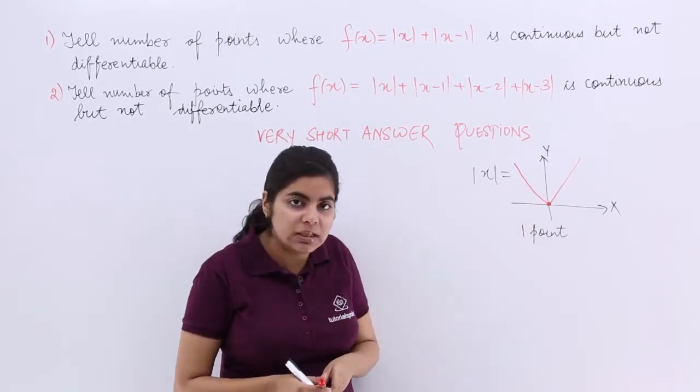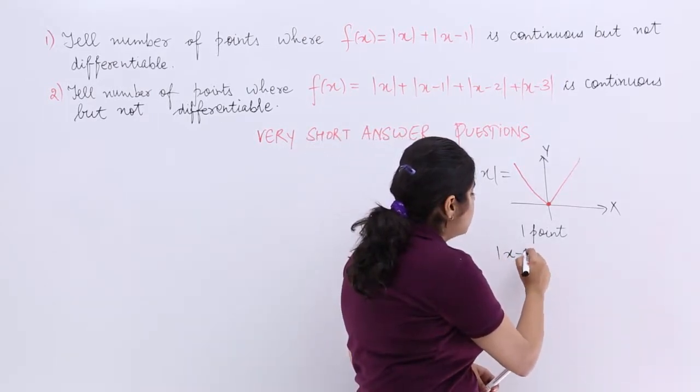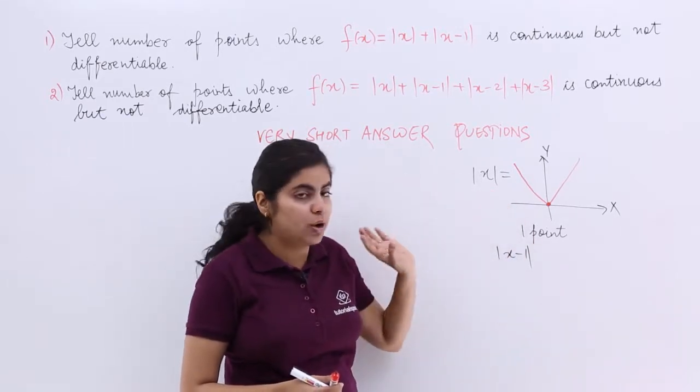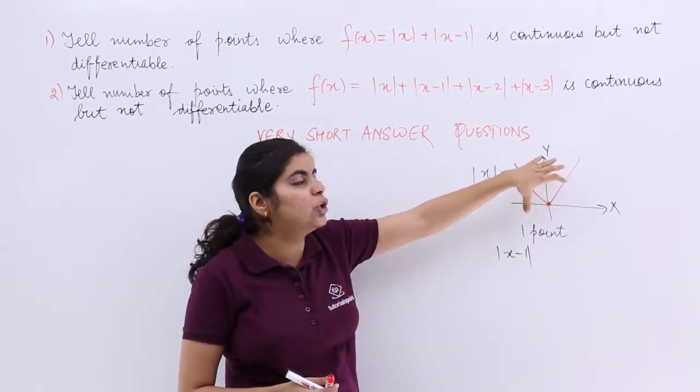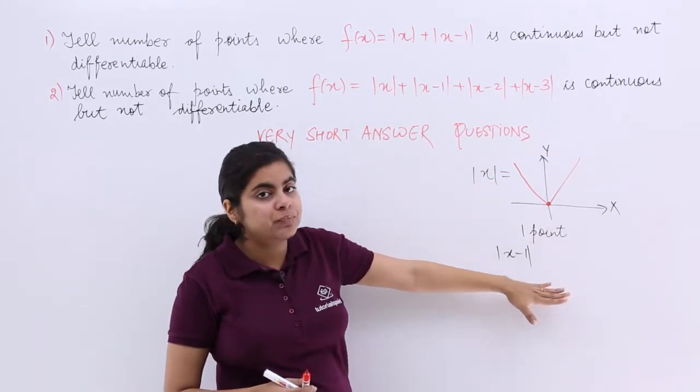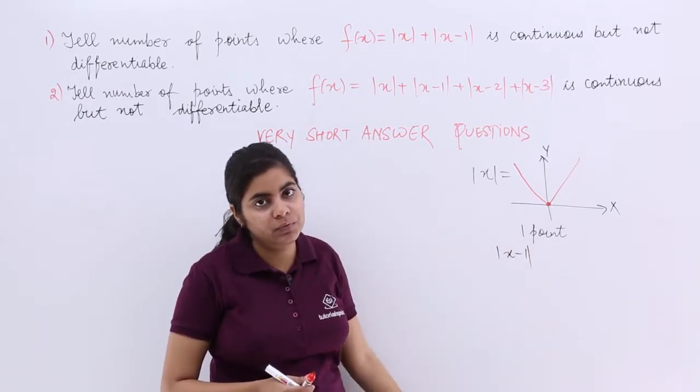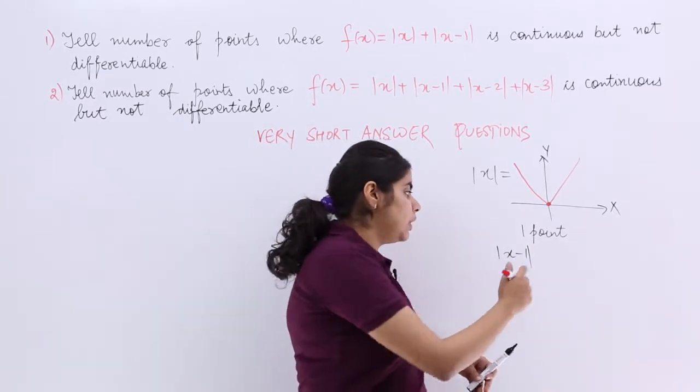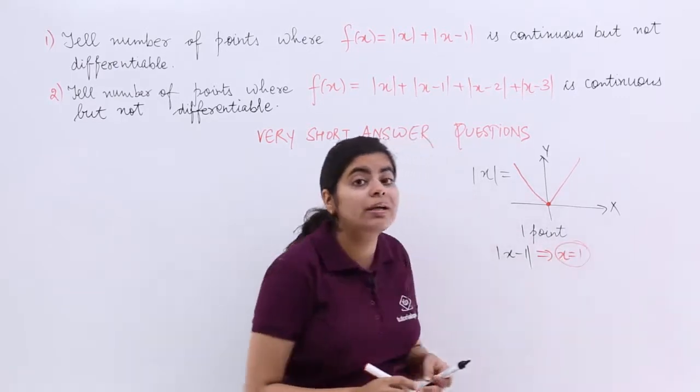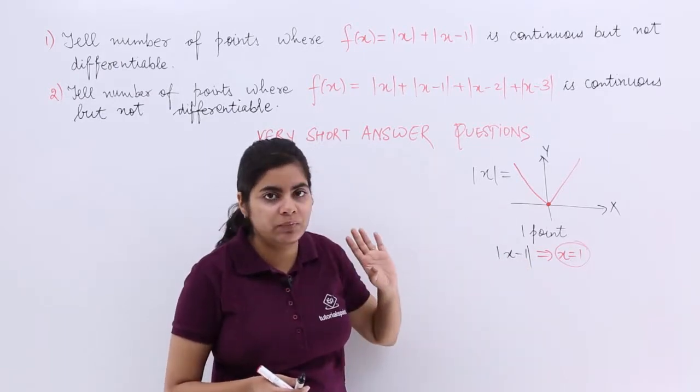Now similarly, if you have the question that it is not mod x but mod x minus 1, and I tell you that now when you know about mod x, you tell me with the help of the knowledge of the previous mod x, at what point mod x minus 1 is continuous but not differentiable. So your answer should be there is only one point again, and that point is x is equal to one. So what is the criteria? How did you solve it? You just put this thing equal to zero, right.